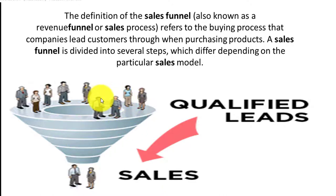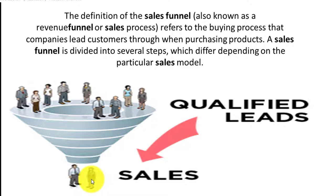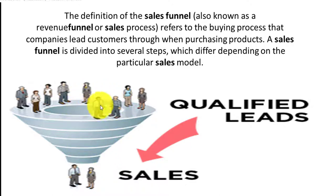At the top of the funnel we have qualified leads, which are potential customers. At the bottom we have sales — people who actually went into our store and made a purchase. The key thing is to get as many people entering the funnel at the top, which equates to more sales generated at the bottom.